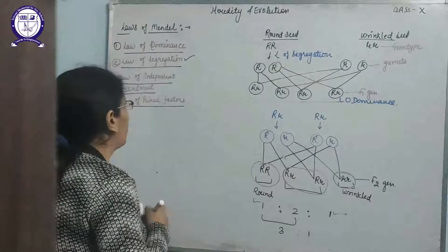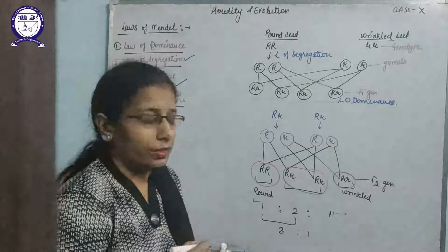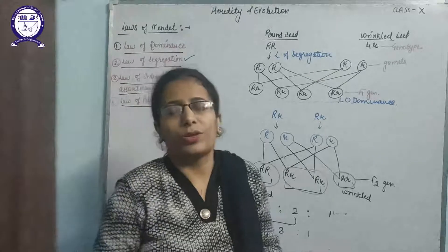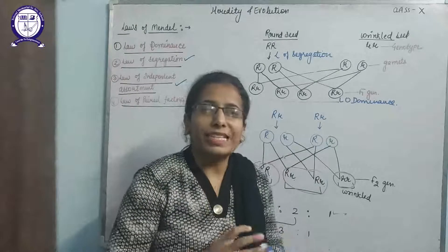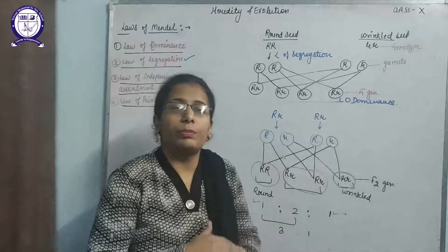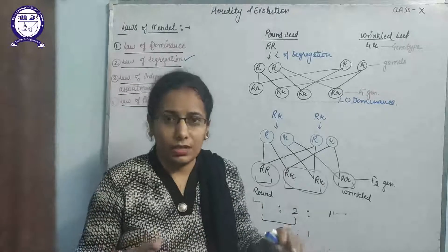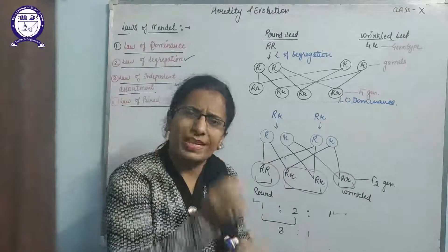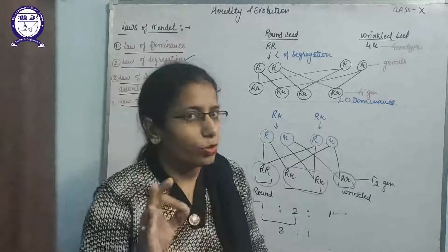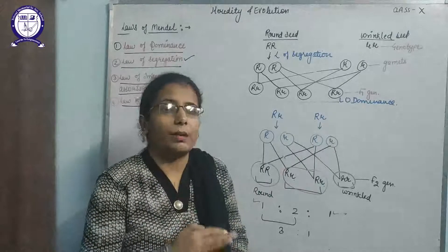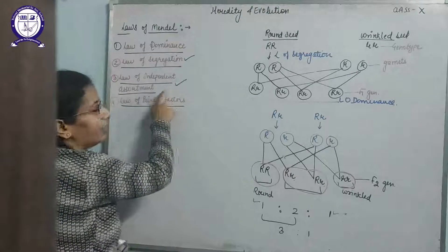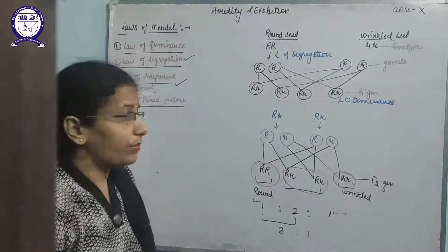Third, the law of independent assortment. This law states that when alleles of a gene coding for a character make their copies and separate and pass into the gametes, that separation will be independent. Each allele will make its copy by itself and pass independently. That means the copying and passing of any allele will not depend upon any other allele. That is known as the law of independent assortment.